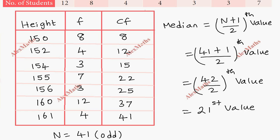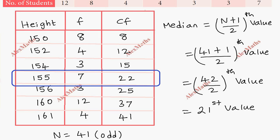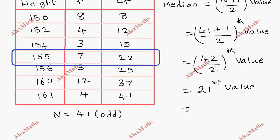Looking at the cumulative frequencies — 8, 12, 15, 22 — the 21st value falls between CF=15 and CF=22. So the 21st value lies in the height class corresponding to 155. Therefore, the median equals 155 centimeters.